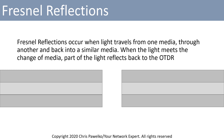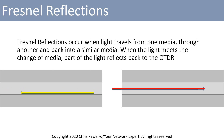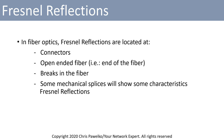Fresnel reflections occur when light travels from one media through another and back to a similar media. When the light meets the change of media, part of the light reflects back to the OTDR. In fiber optics, Fresnel reflections are located typically at your connectors, open-ended fiber (otherwise known as the end of the fiber), breaks, and some mechanical splices will show some characteristics of Fresnel reflection.